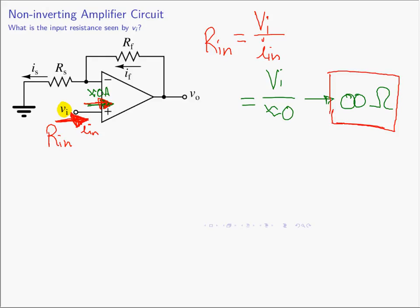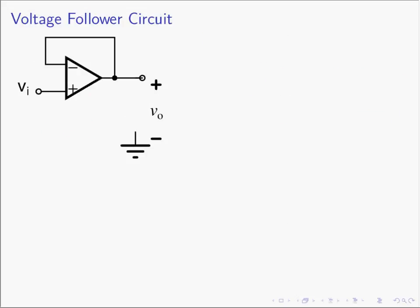Now let's look at a special case of the non-inverting amplifier: the voltage follower. It's actually very easy to analyze, and we'll do it two ways. We have no current flowing into the op-amp inputs. The op-amp has a really large output, which is the big voltage difference of the inputs, and we have negative feedback, so those two voltages will be the same. The voltage at the non-inverting terminal is VN; the inverting and non-inverting terminals are virtually shorted together, so the voltage there is also VN — and that is Vout. So Vout simply equals VN; hence the name.